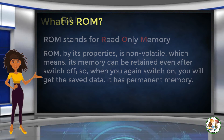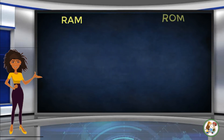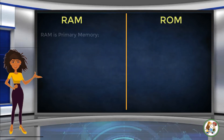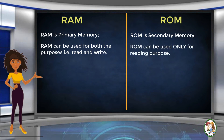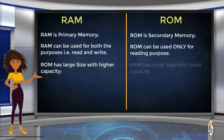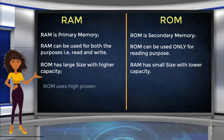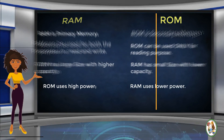Now, check out the major differences between them. RAM is primary memory, whereas ROM is secondary memory. RAM can be used for both purposes, i.e. read and write, whereas ROM can be used only for reading. ROM has large size with higher capacity, whereas RAM has small size with lower capacity. ROM uses high power, whereas RAM uses lower power.